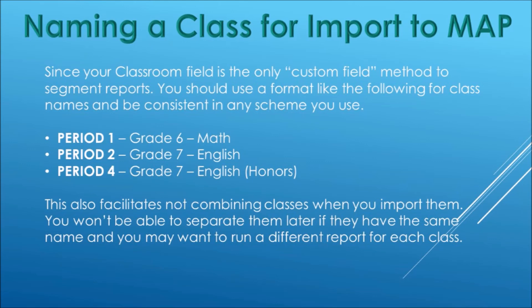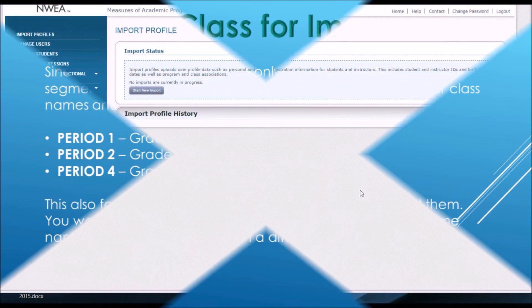If you're naming a class for import in MAP, since the classroom field is the only really customizable method of segmenting your reports, you should use a consistent format for class names. For example, include the period in the class name. This prevents combining classes from different periods when you import them — two classes with the same name will show up and report together. You may want to separate two classes that have the same name but different level children. Since there is no field for period, the class name is your only opportunity to divide classes this way.